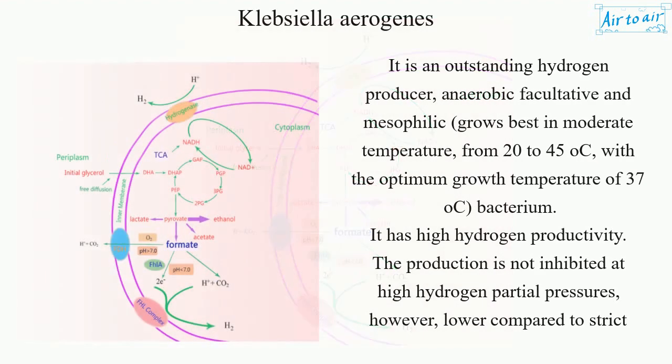It is an outstanding hydrogen producer, anaerobic facultative and mesophilic, grows best in moderate temperature from 20 to 45°C, with the optimum growth temperature of 37°C. It has high hydrogen productivity.